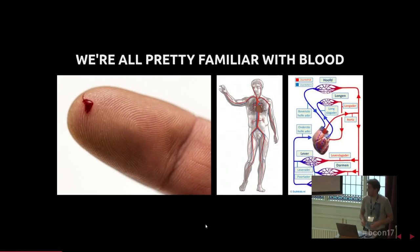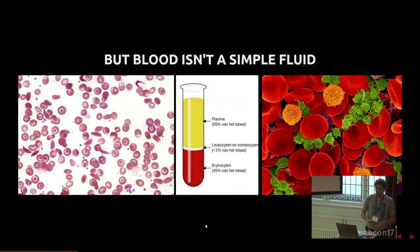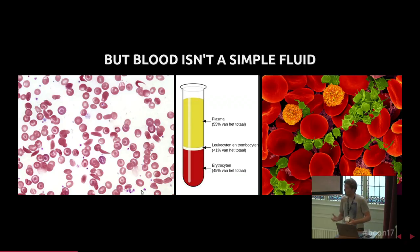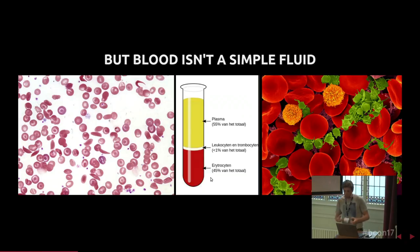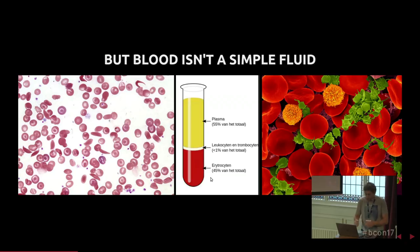Everybody knows blood — you know it's flowing through your body. But what you might not realize is that blood is not really a simple fluid like water. When you look at blood under a normal optical microscope, you see all these little cells — red blood cells, platelets, white blood cells. They actually make up quite a lot of the blood. If you put blood in a centrifuge, almost half of it is these cells, and the other half is blood plasma, which is more like a fluid. Because there are a lot of cells in there, it acts really funny when you look at the physics, and it's important to model it correctly when doing simulations.